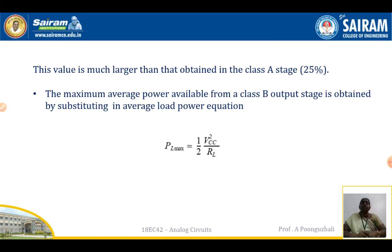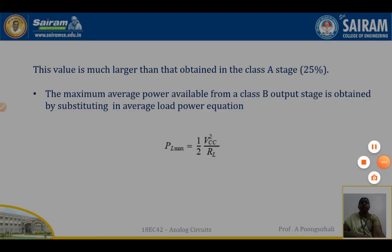If we neglect VCE(sat) and approximate V0 ≈ VCC, then η = π/4, giving a maximum efficiency of 78.5%. Compared to Class A's 25%, Class B significantly improves efficiency. The maximum average load power is PL(max) = ½ × VCC² / RL. In the next video, we will see about the Class AB amplifier.